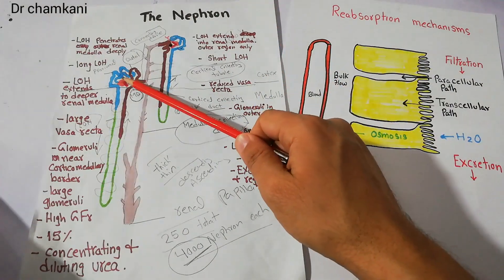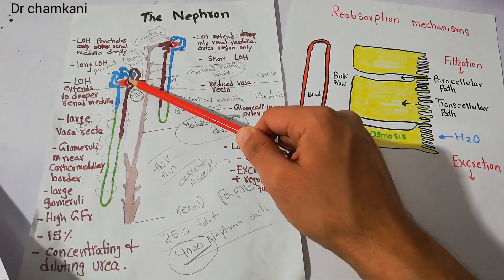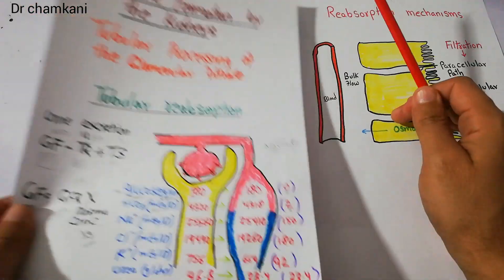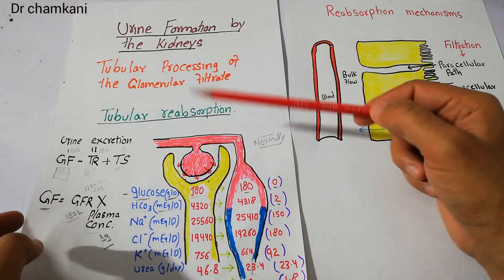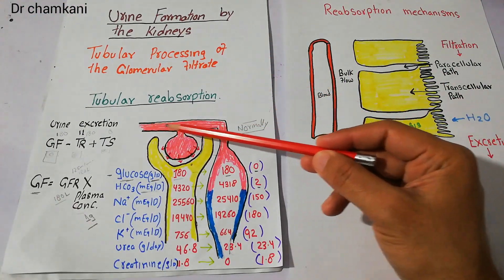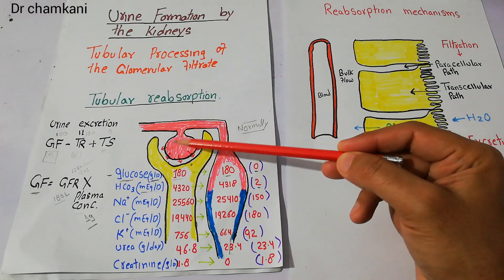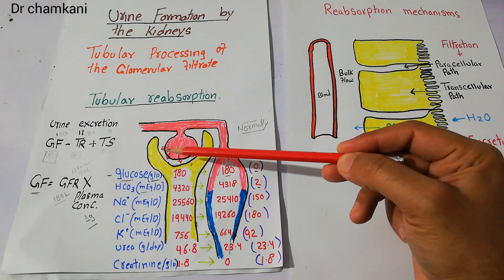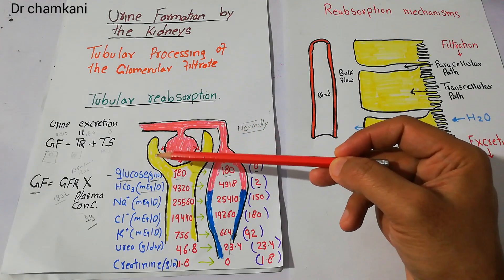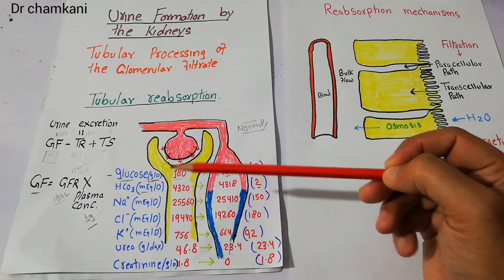This is the Bowman's capsule, here is the proximal tubule, and here we have the afferent and efferent vessels. This enlarged view shows the afferent and efferent vessels, the glomerular capillaries where filtration is occurring. The filtrate then enters the Bowman's capsule and moves through the proximal tubule.